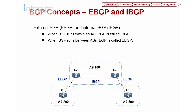In BGP we have two concepts: one is called external BGP (eBGP) and the other is called internal BGP (iBGP). In this diagram I have three AS — AS100, AS200, and AS300. These three AS are connected through routers R1 to R2. We call this eBGP because AS200 and AS100 belong to two different autonomous systems. Between R2 and R3, both routers belong to the same AS, so we call it iBGP. When BGP runs within an AS we call it iBGP; when it runs between different AS we call it eBGP. When looking at configuration, it is very important to know whether it is iBGP or eBGP.